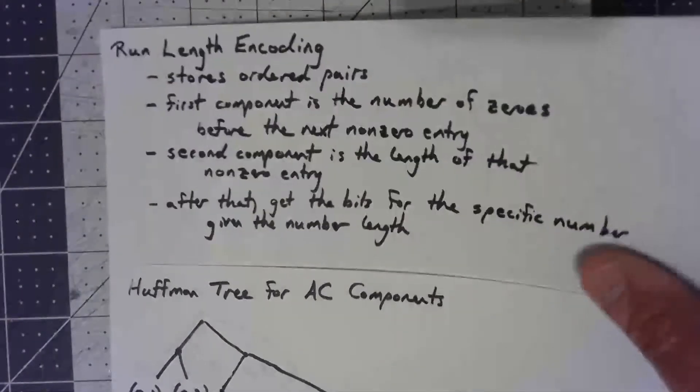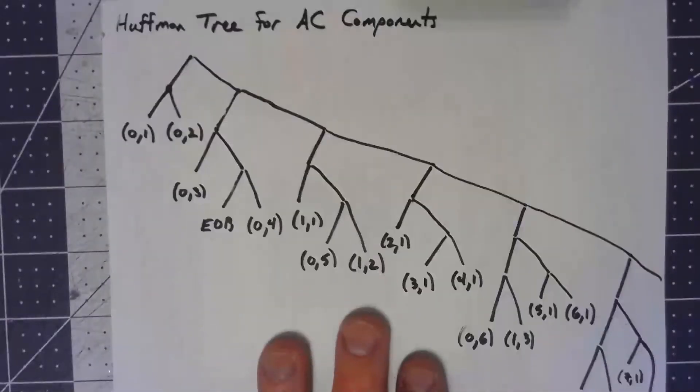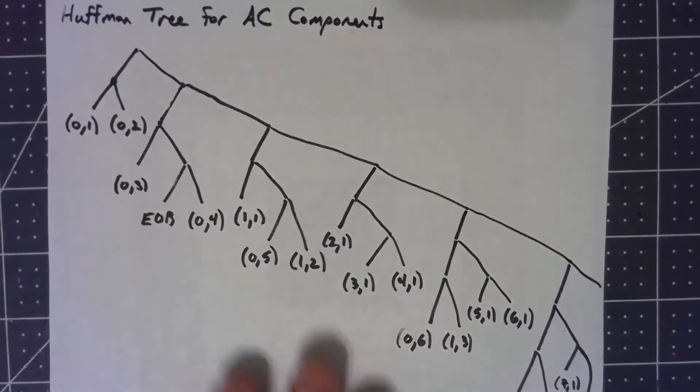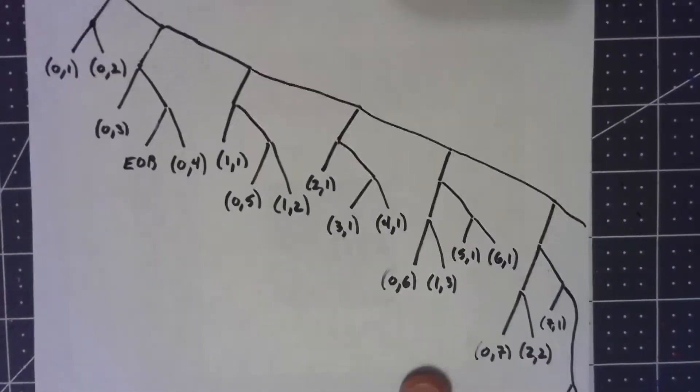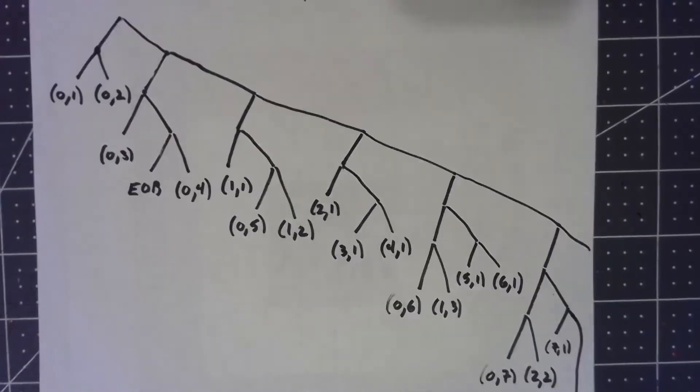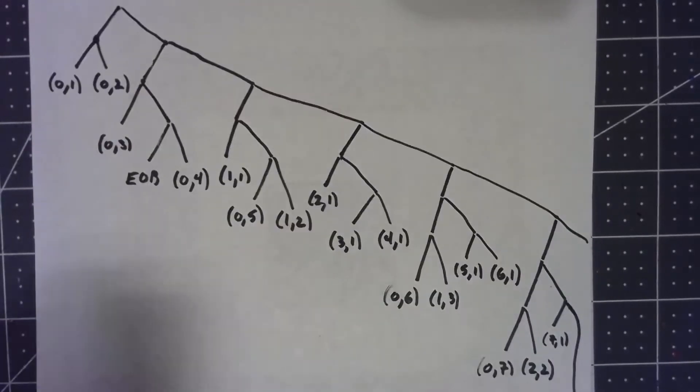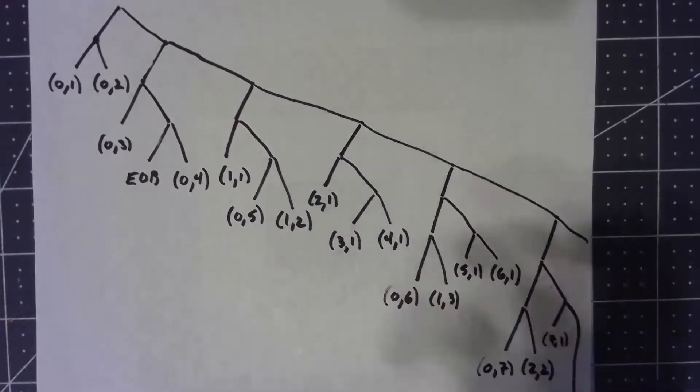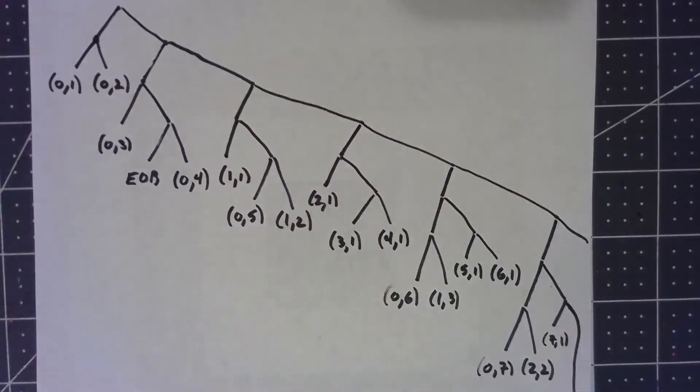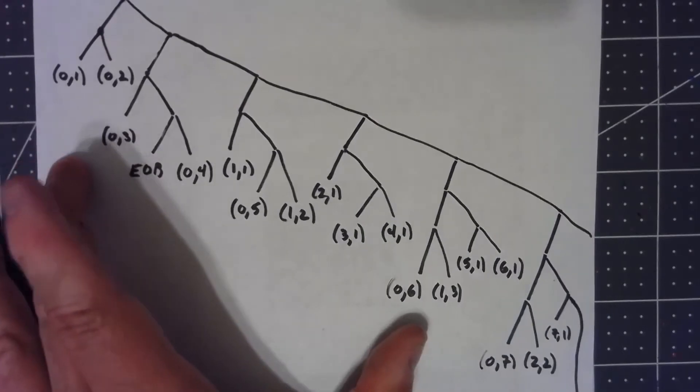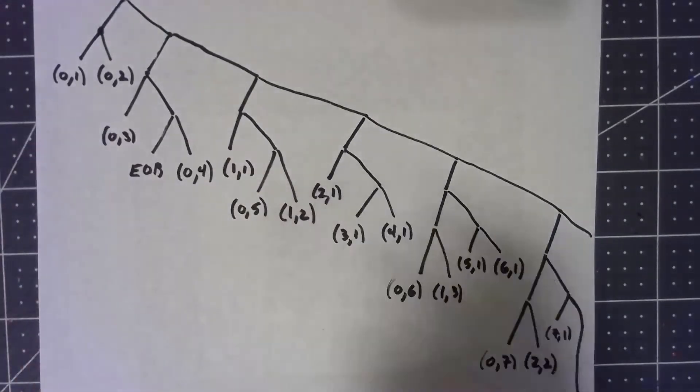But to get those ordered pairs, there's a big ugly tree kind of like this. Now it's worth noting that this tree does go on beyond this. There's other ones that can come up. However, like all Huffman coding, this means that the most commonly occurring things are the easiest to encode. The ones that I've got on here should be the ones that show up the most.